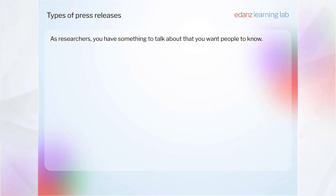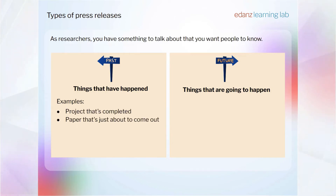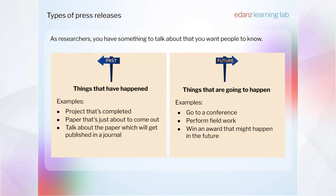Let's imagine that we have something we want people to know about as researchers. Fundamentally, we'll either be talking about things that have happened in the past or things that are going to happen in the future, so there are two kinds of press releases. First, you might have a project that's finished or a paper that's just about to get published in a journal. Secondly, you might talk about going to a conference, doing some fieldwork, or winning an award that might be happening in the future. So two different kinds of timings for these documents.